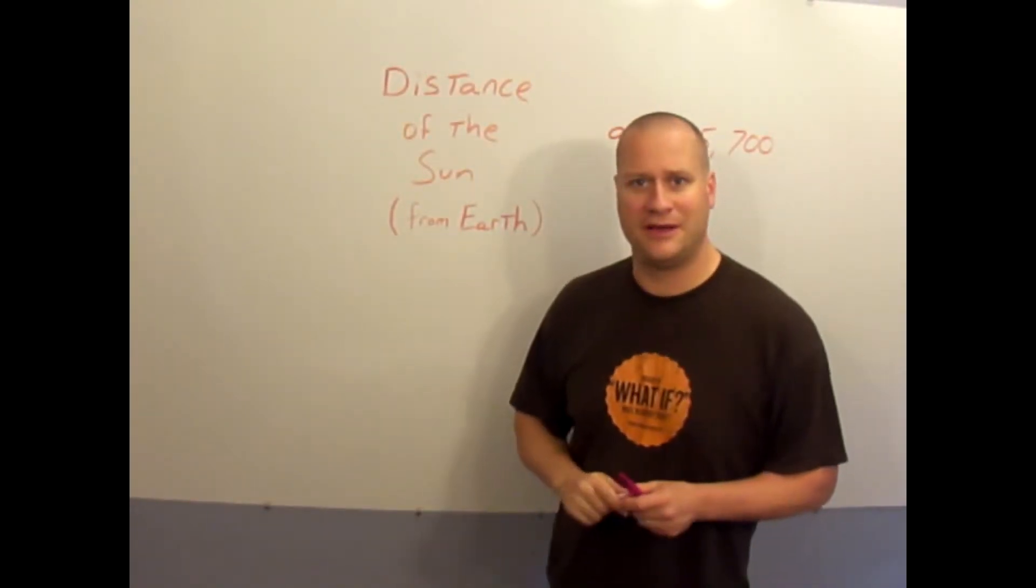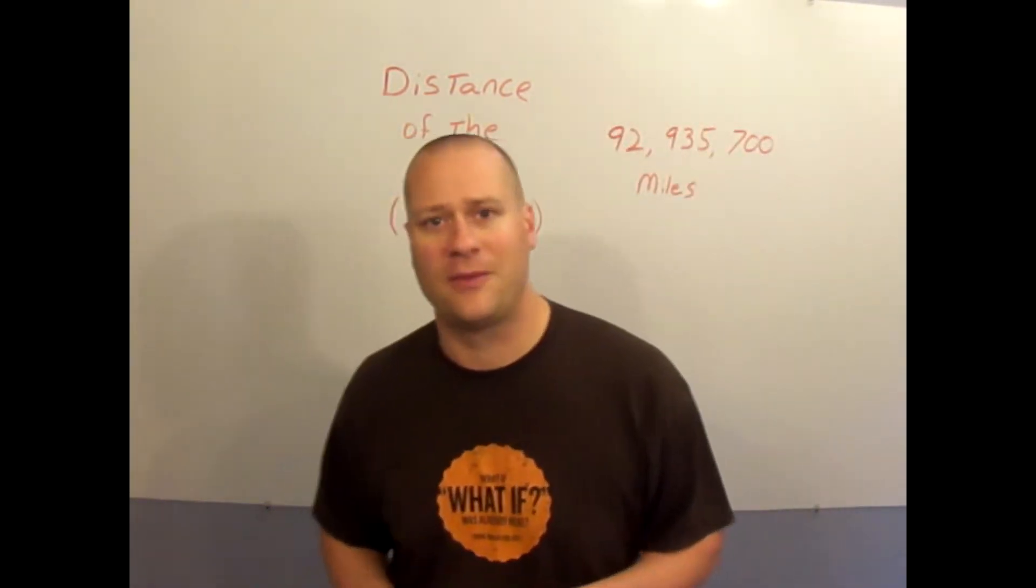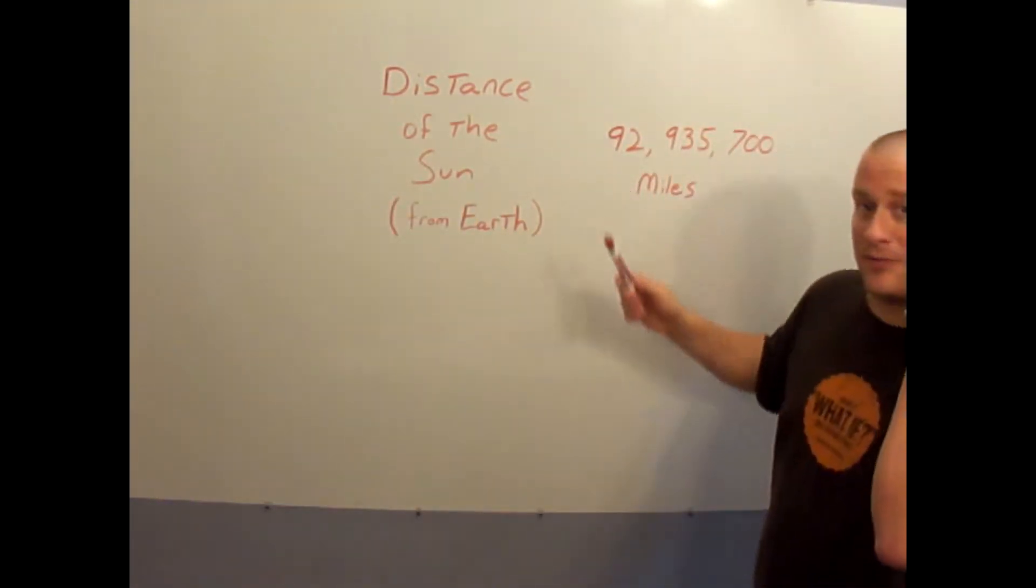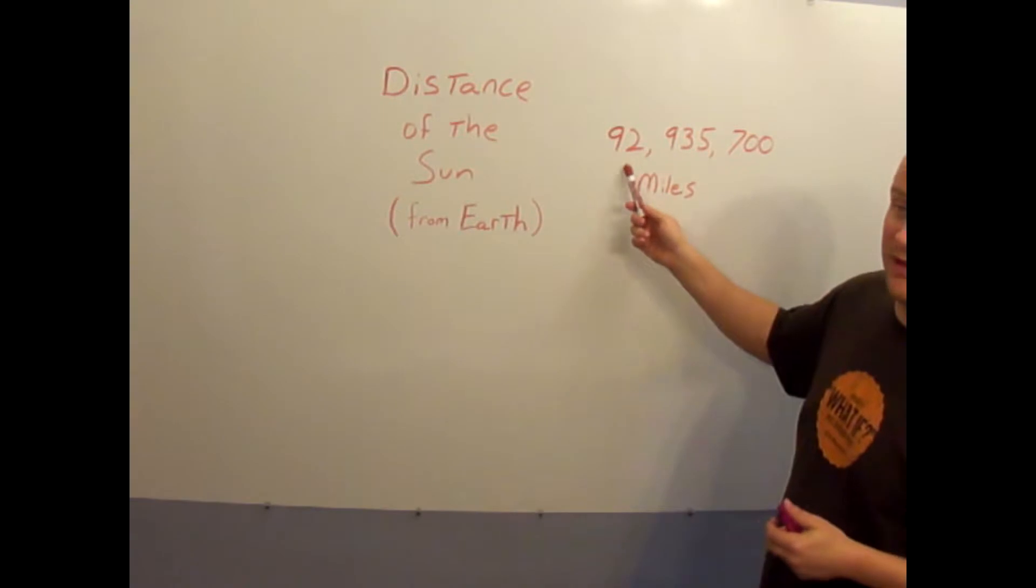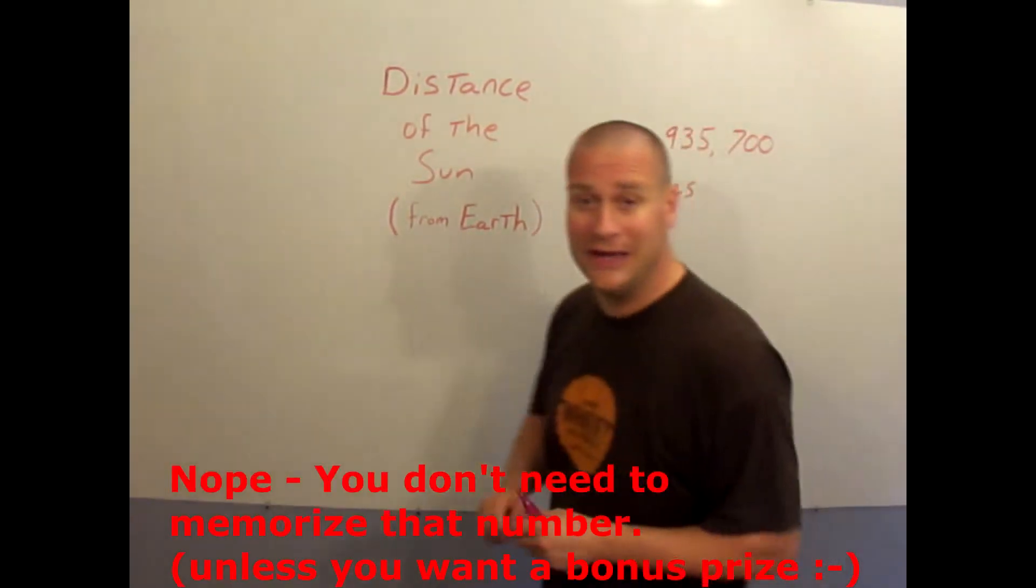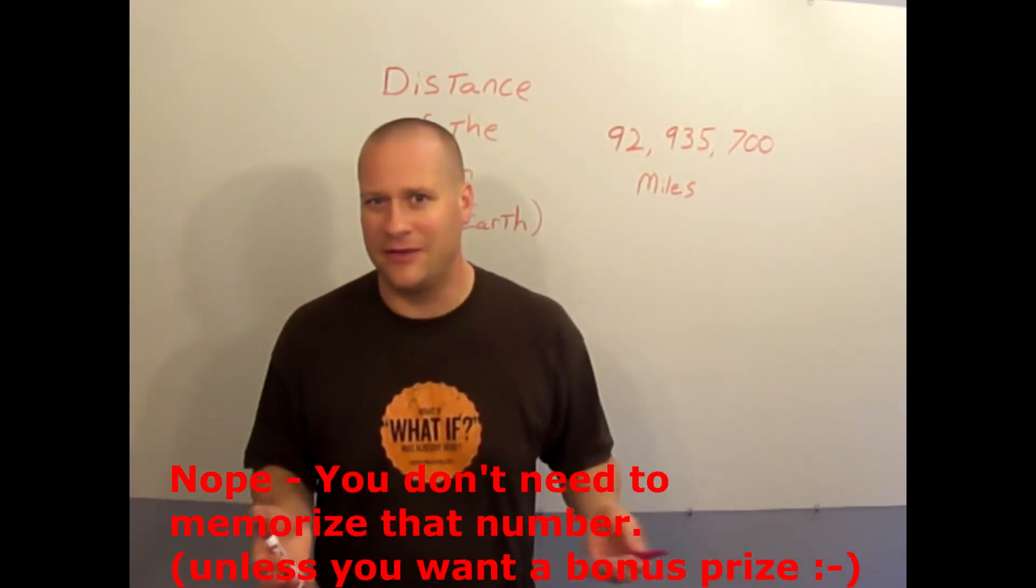The Sun is one million times bigger than the Earth. How far away is the Earth from the Sun? The distance from Sun to Earth, well here's the technical number: it's 92 million 935 thousand 700 miles away.